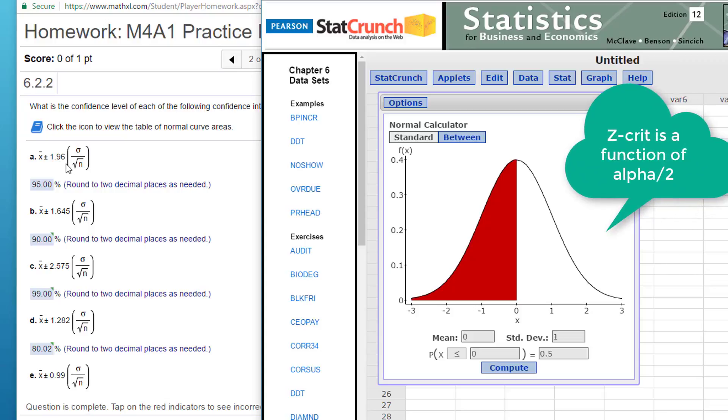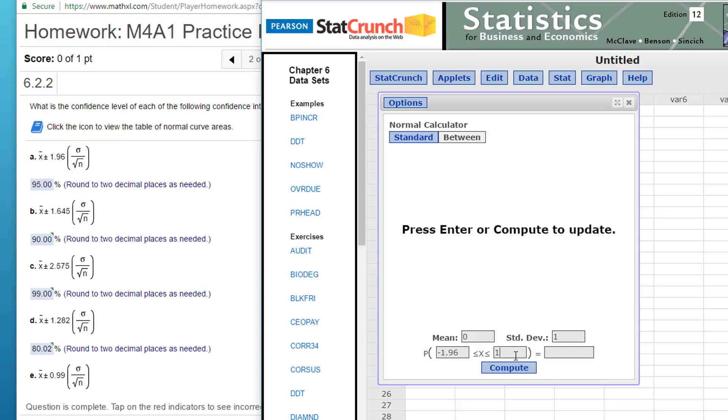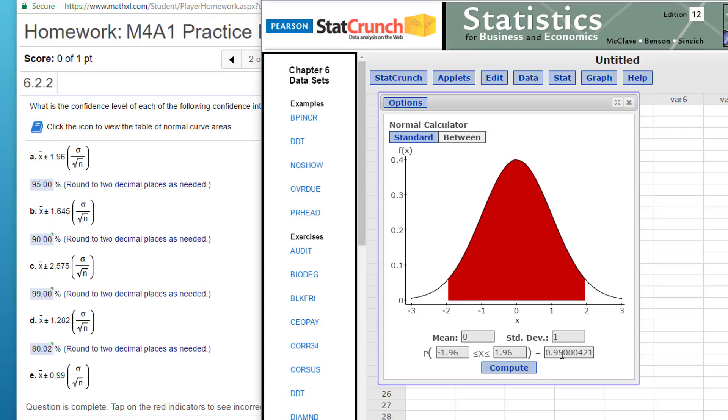And we should remember that in the formula for the confidence intervals, this is Z critical. So if we know Z critical, then we can calculate the confidence level, which is one minus alpha. And we can find that by using the normal calculator. I like to use the between again, because I'm dealing with plus and minus. And if I put in minus 1.96 and plus 1.96, which is my two values for Z critical, and click on compute, I get 95% in the area between, which is my confidence level C, which again is one minus alpha.